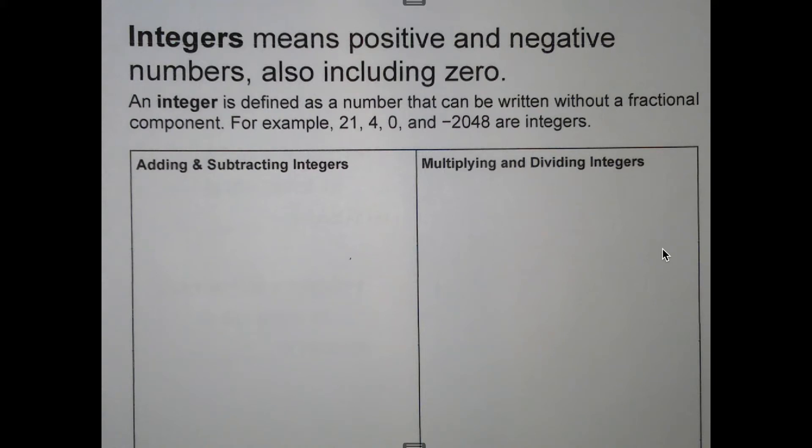So negative 5, 0, 10, 15, those are all integers. If it has a fraction or it's a decimal, it's not considered an integer.